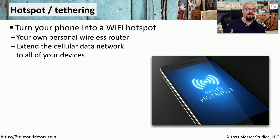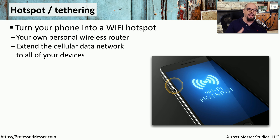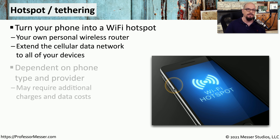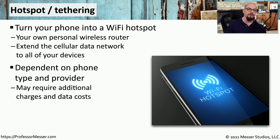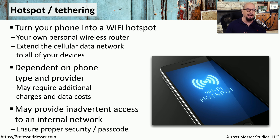On your corporate network, you probably have an internet connection with a next-generation firewall and security policies associated with that connection, and you may find certain websites are blocked or access is limited. Some users have found that instead of using their corporate network connection, they can turn their phone into a Wi-Fi hotspot and have unfettered access to the internet through their cellular phone provider. Not only does this allow unsecured internet access bypassing corporate controls, it could also allow access into your corporate network through a path that doesn't go through existing security controls. This is probably not a capability you'll want to allow by default, and it should be administered and monitored through your mobile device manager.